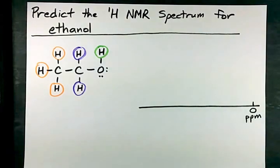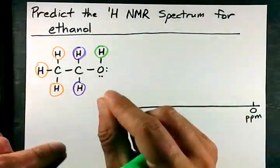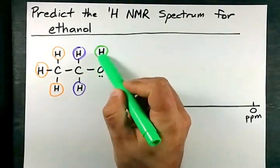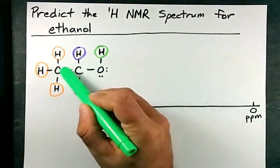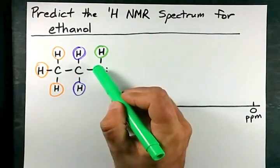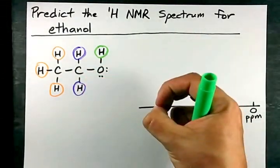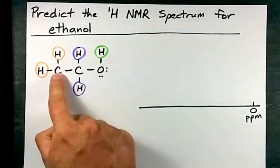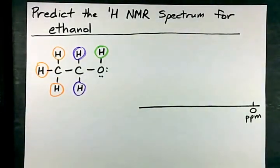Now if you have symmetry in the molecule, remember sometimes you'll have equivalent hydrogens in more than one place. In this case, because we have an OH on the end, as you get farther away from the O, the O will have less of a pull on the electrons around the hydrogens, and so only hydrogens connected to the same carbon are equivalent.